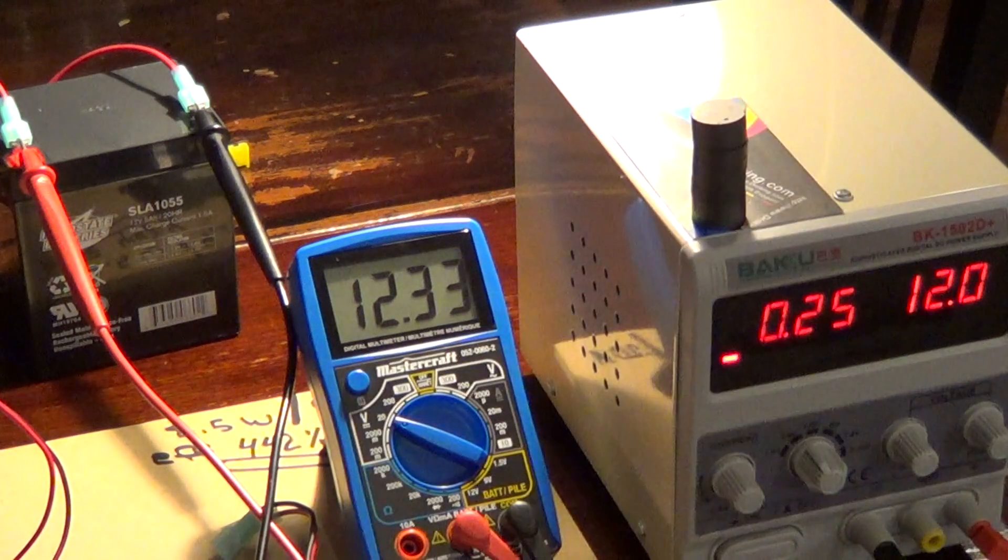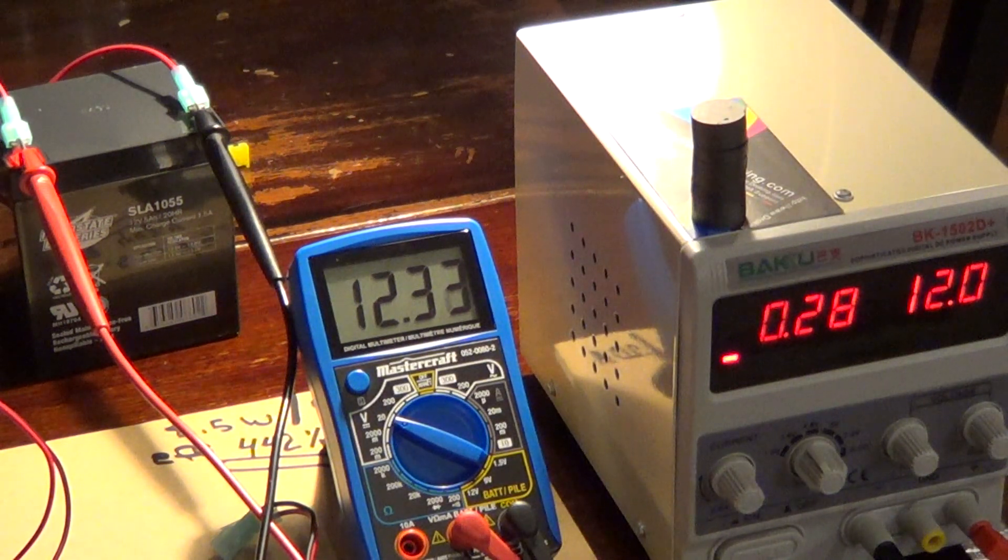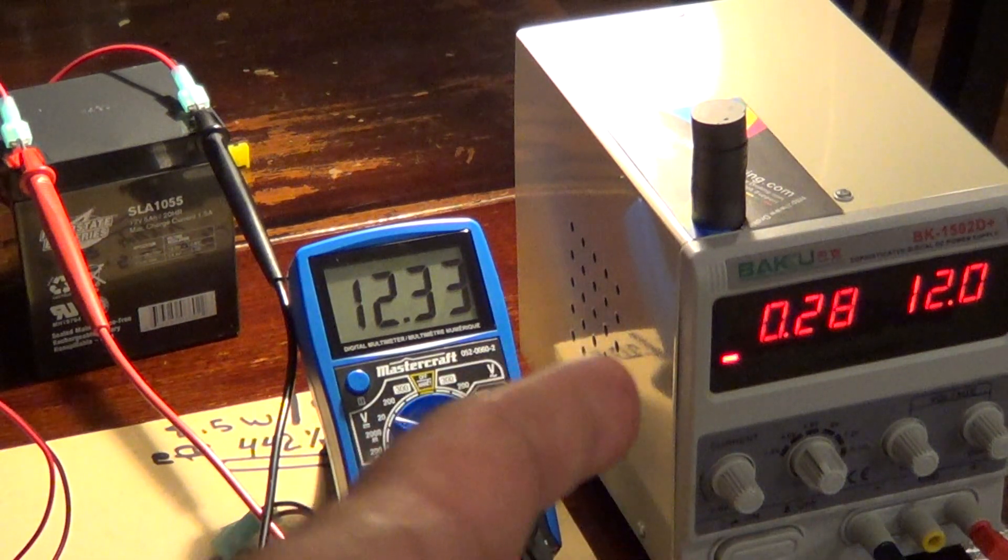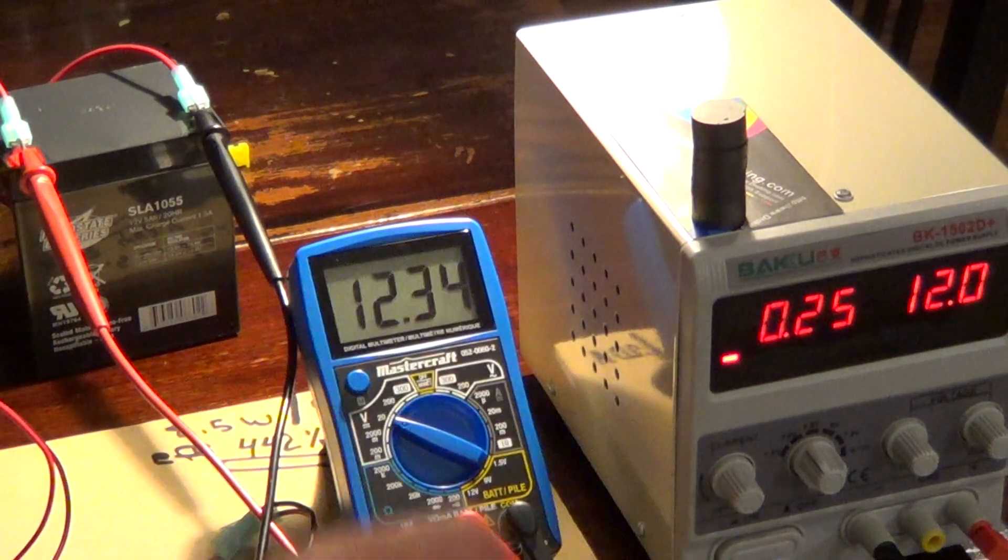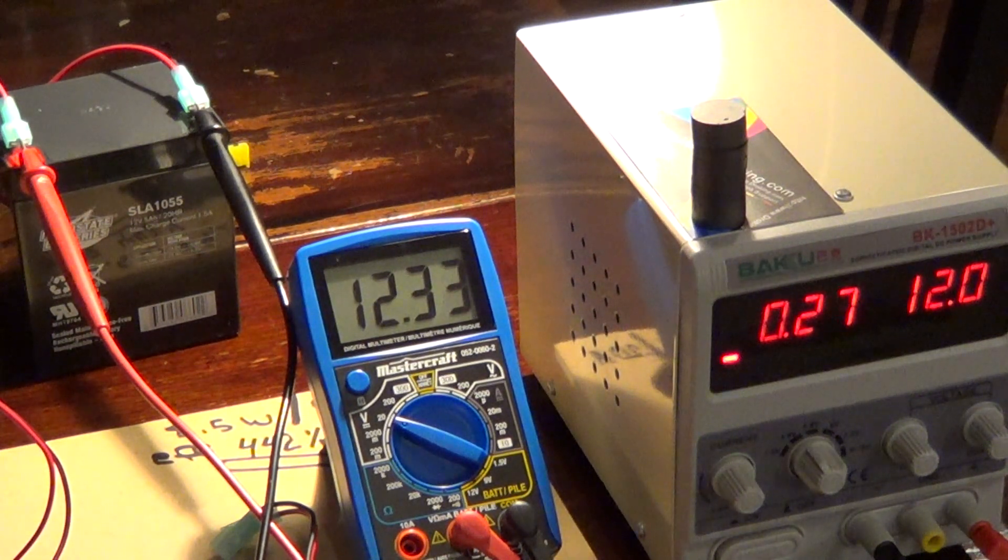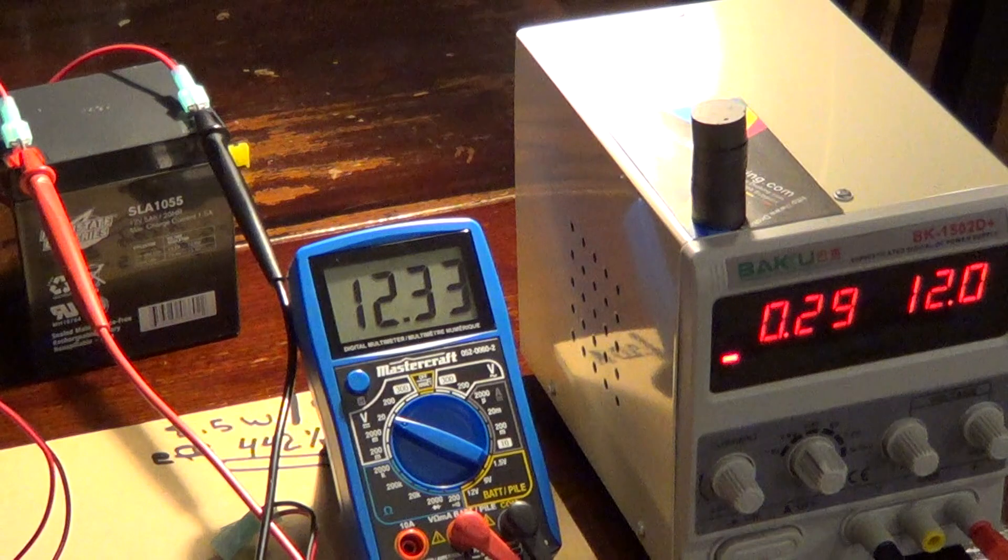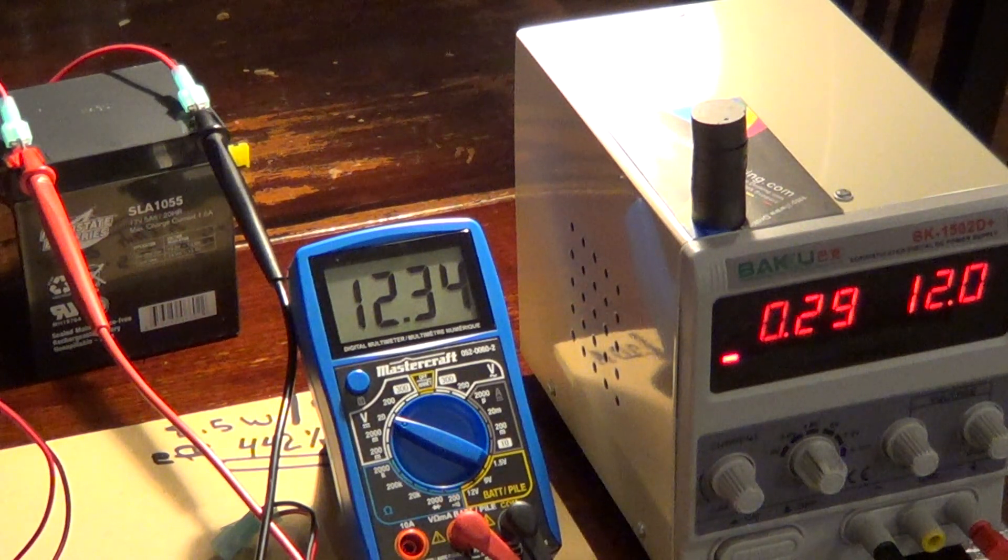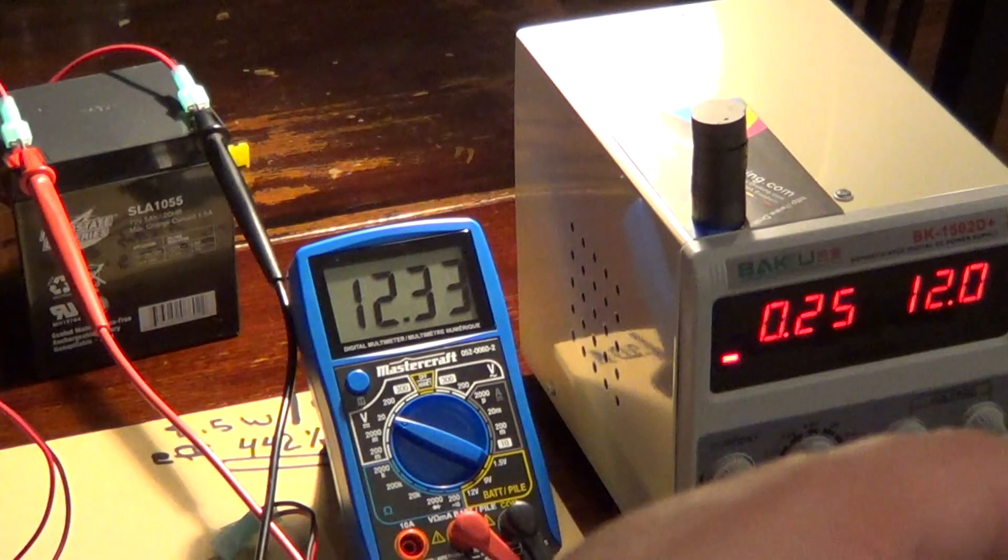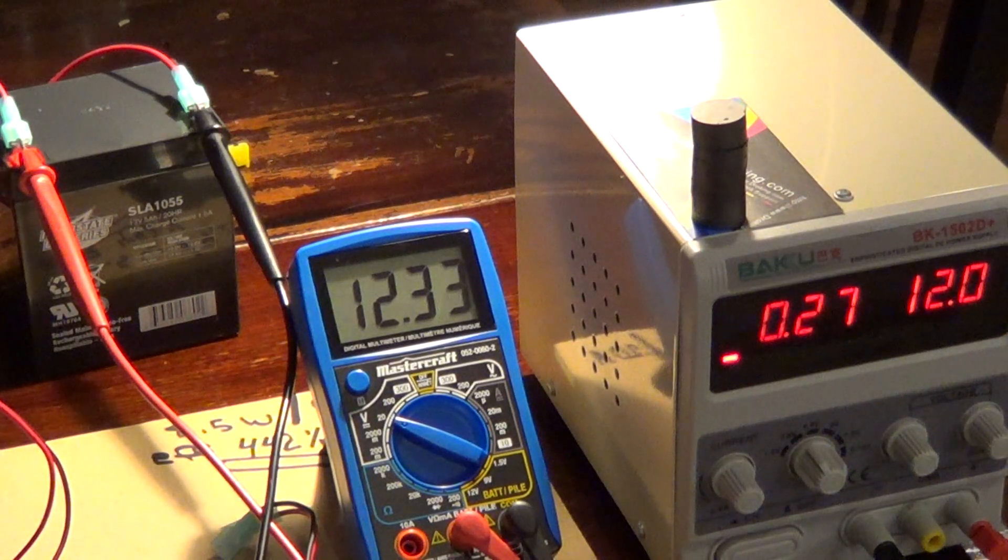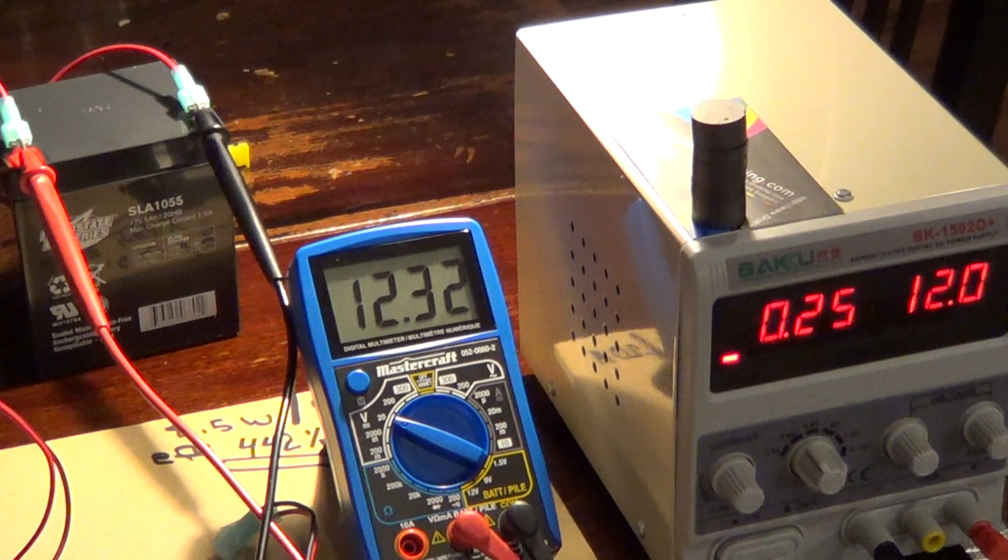If you grab two car batteries that are, say, 10 volts or 11 volts, hook those guys up together - you've got the capacity so you can last a long time. Then you can still charge batteries with a dead battery, because you've always got one stack of batteries on the other side while you're charging up the other stack on the other side of the system. It just makes sense.